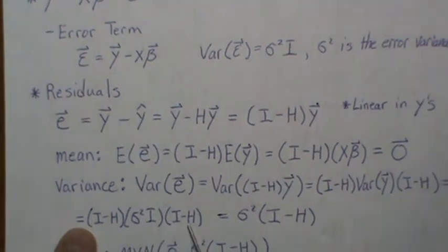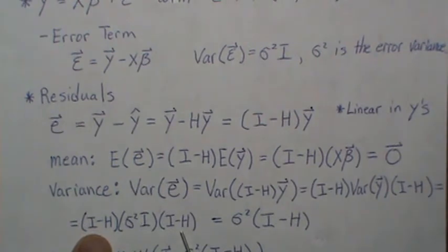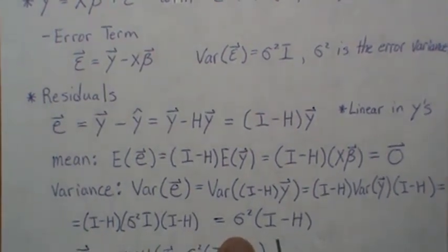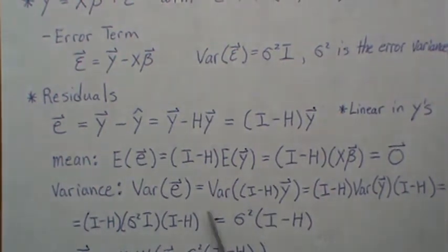The variance of y is sigma squared I, so the constant we can take out front. And since these are idempotent, you just get this. So this is the variance covariance matrix of the residuals.